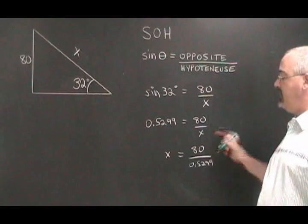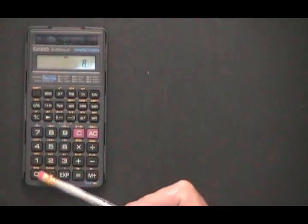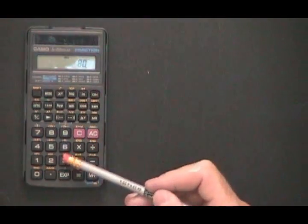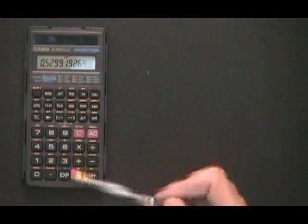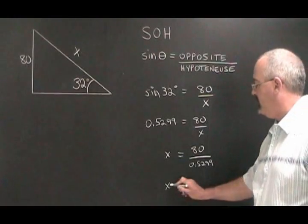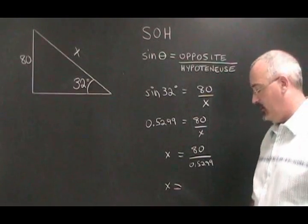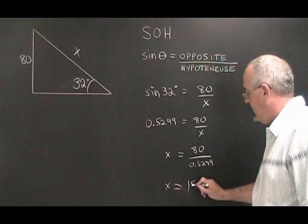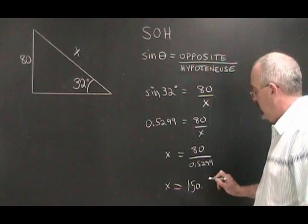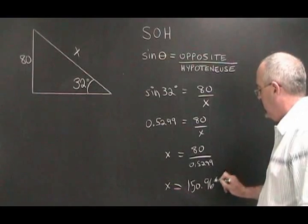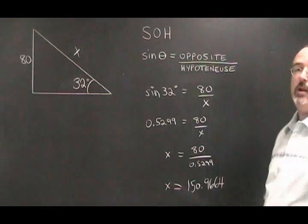Now we just have a division to do. 80 divided by the sine of 32 degrees is equal to 150.9664. x is therefore equal to 150.9664, and we have our answer.